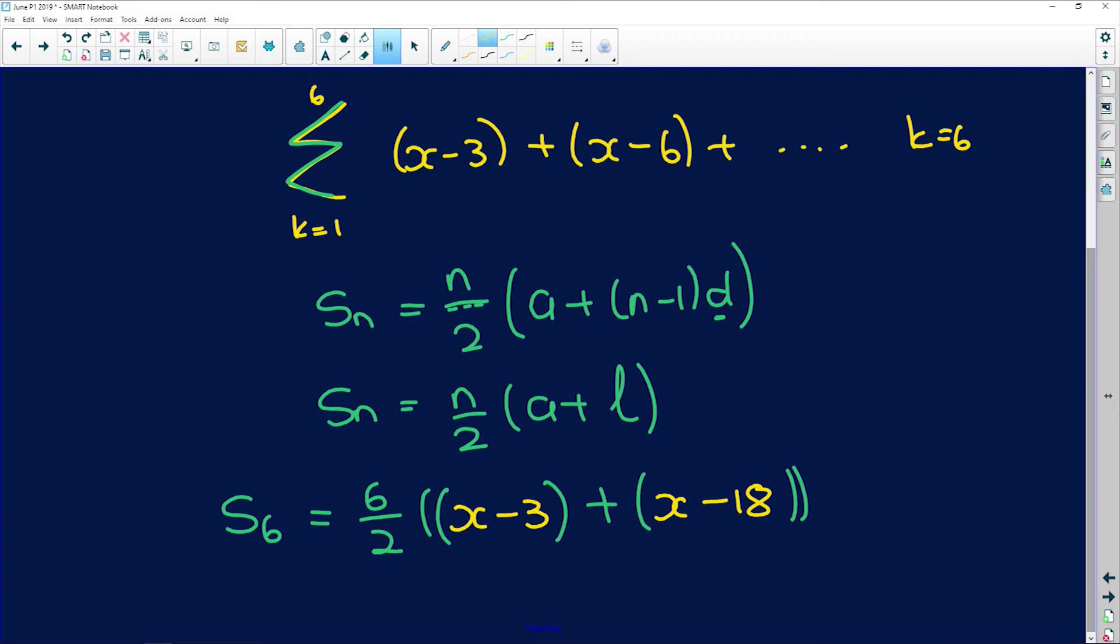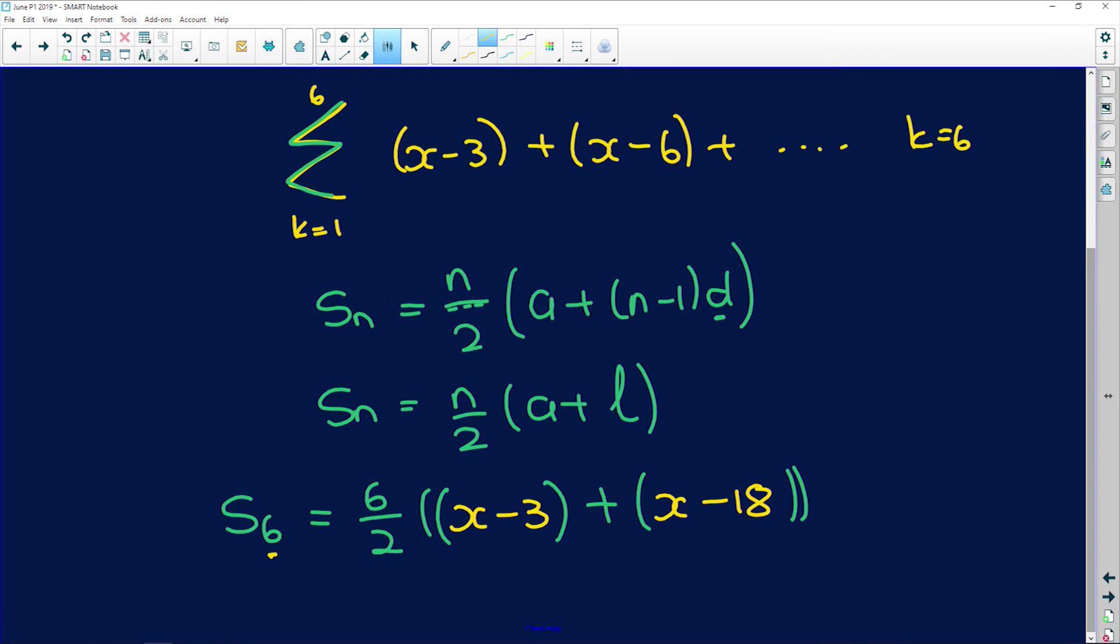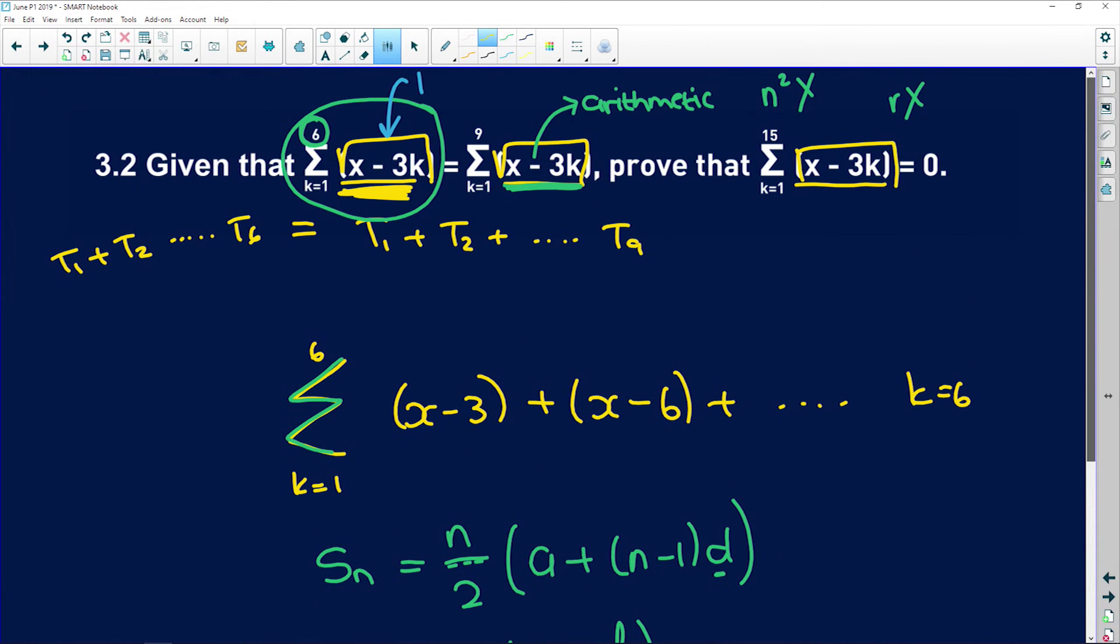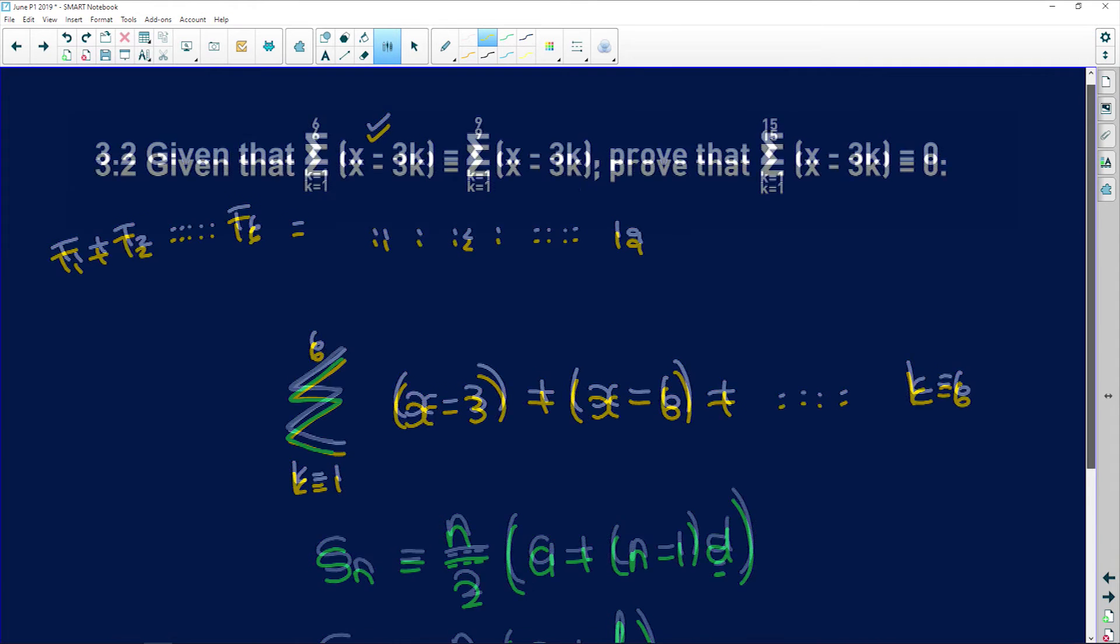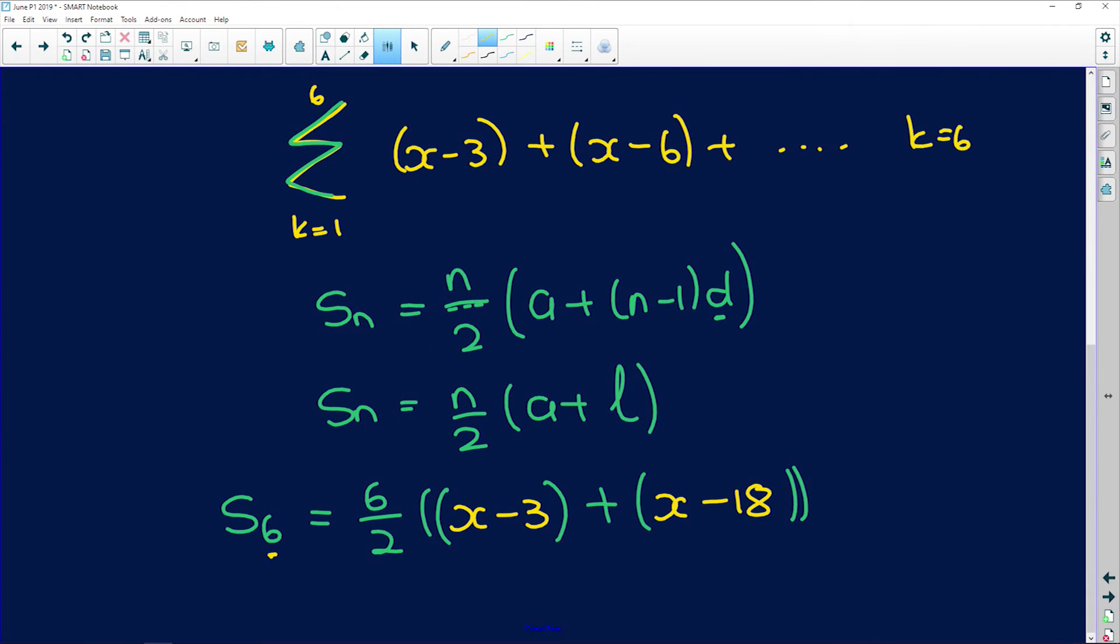That is the sum to the 6th term. And now they've said to us the sum to the 6th term, this is looking real messy, let me clean this up. So we've sorted this one out. The sum to the 6th term is equal to the sum to the 9th term, so let's find an expression for the sum to the 9th term.